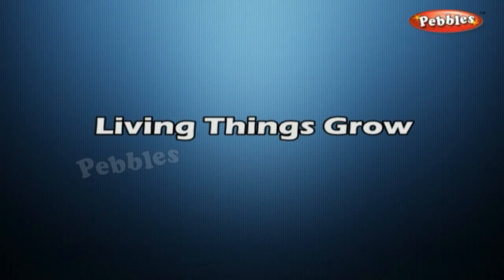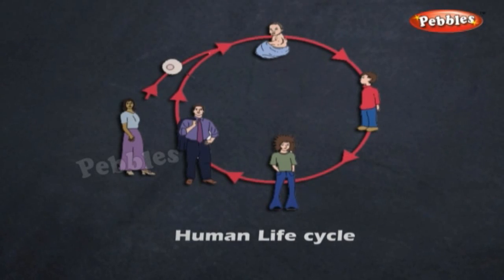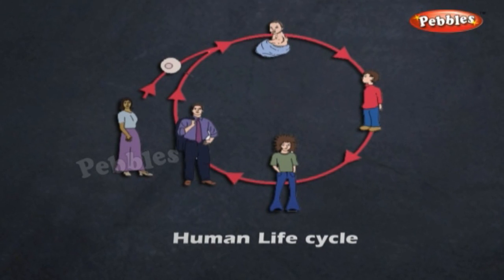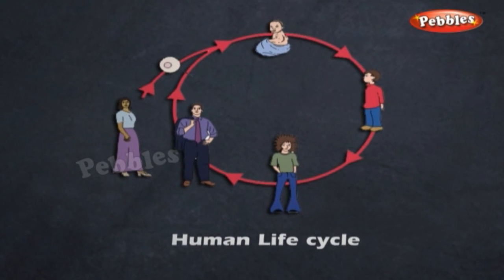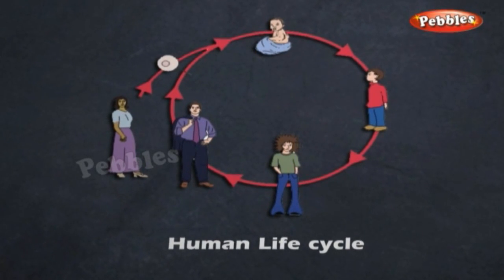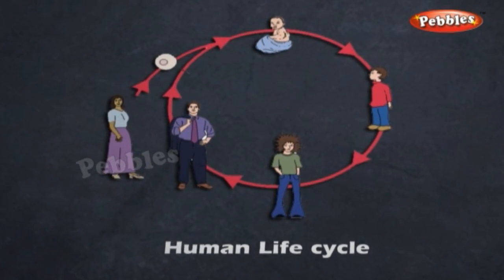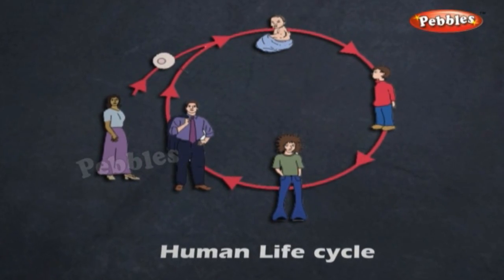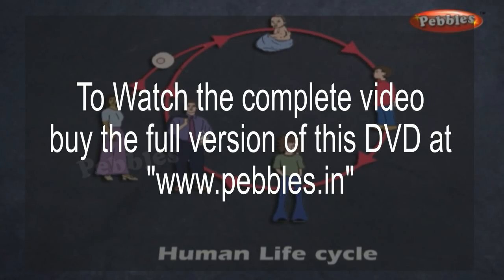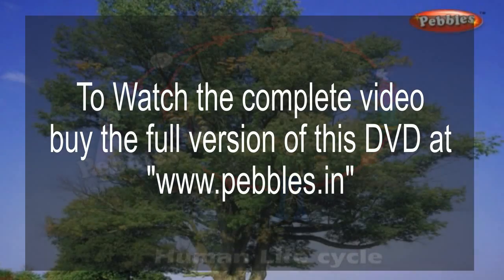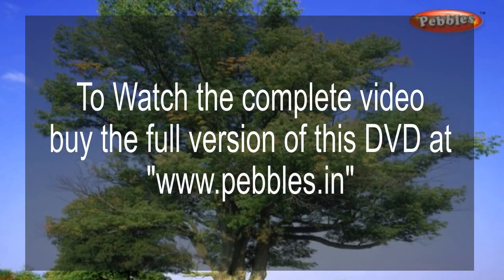Living things grow. Living things usually do not remain the same size. There is an increase in size as they grow older. Small seedlings grow into plants. Many of them grow to become taller.